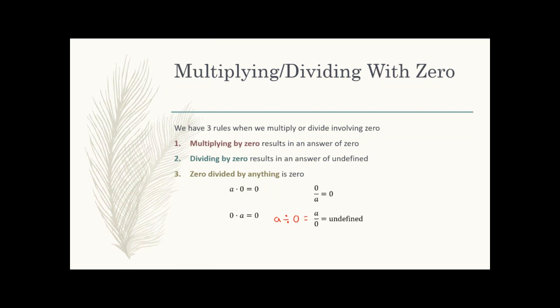Third rule: zero divided by anything — if zero is on top of a fraction or before the division symbol — your answer is zero. Basically, if you're multiplying or dividing with zero it's always going to be zero, unless zero is in the denominator or after the division symbol. That is the one special case where it's not zero — it's undefined.